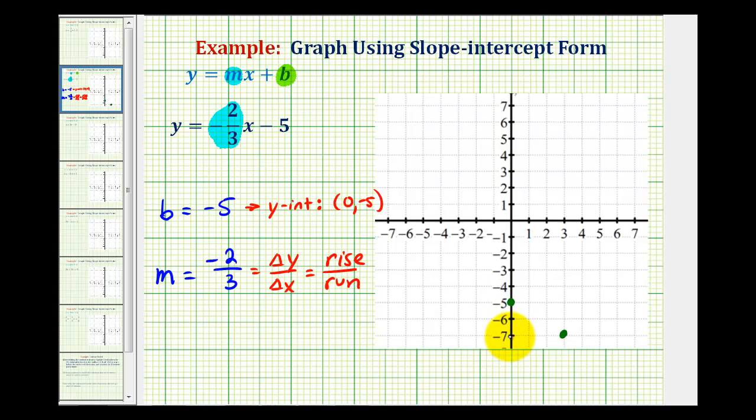Again, we went down 2 units because the change in y was negative 2, and we went right 3 units because the change in x was positive 3. So the line, y equals negative 2/3 x minus 5, passes through these two points.